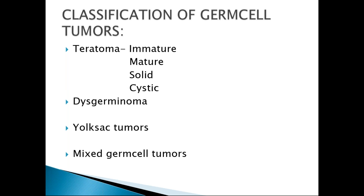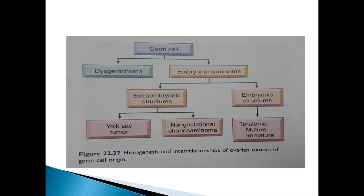The classification of germ cell tumors is divided into teratoma, dysgerminoma, mixed germ cell tumors, yolk sac tumor, non-gestational choriocarcinoma, and teratoma. Dysgerminoma originates separately, while extra-embryonal elements give rise to yolk sac tumors and non-gestational choriocarcinoma, and embryonal elements give rise to teratoma.